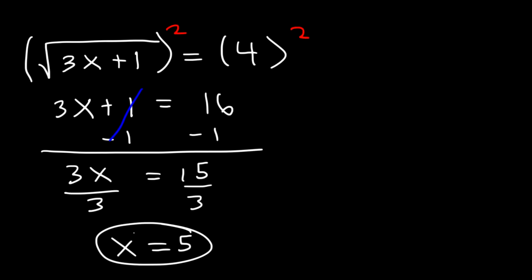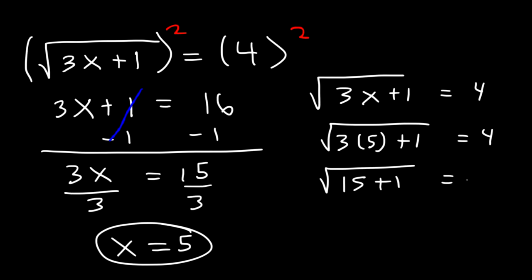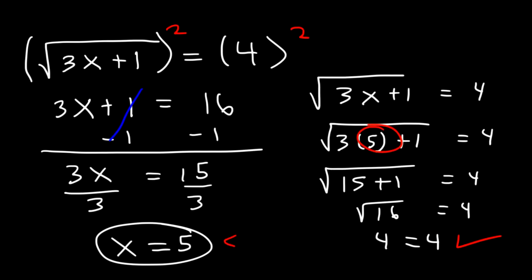If you want to check your work, using the original equation, let's replace x with 5. So we have 3 times 5 plus 1. 3 times 5 is 15, 15 plus 1 is 16, and the square root of 16 is 4. So 5 is indeed an answer — x equals 5.